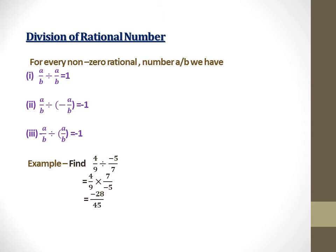Second point: a/b ÷ (-a/b) = -1. It means if a rational number and its additive inverse is divided, then the resultant will be -1.